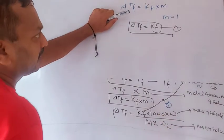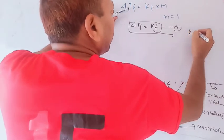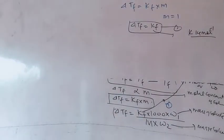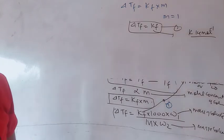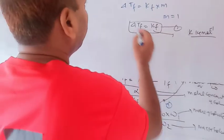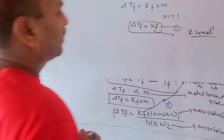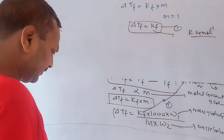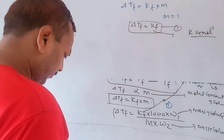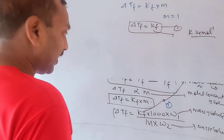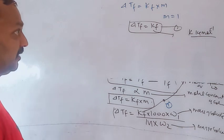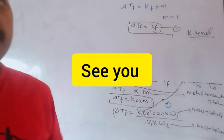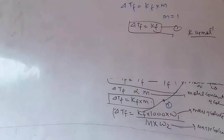The unit of the cryoscopic constant is Kelvin kg per mole inverse. To recap: depression in freezing point, delta Tf, is the difference between the freezing point of pure solvent and the freezing point of the solution. We have explained this both mathematically and graphically. In the next video, we will discuss one numerical based on this topic.